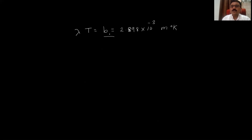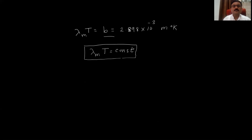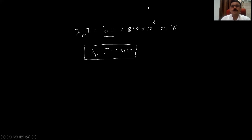This equation holds for the condition of maximum intensity, so we write it as λm × T = constant = 2.898 × 10⁻³ m·K. This is Wien's displacement law. This law is very useful in determining the temperature of hot objects, particularly the temperature of stars.